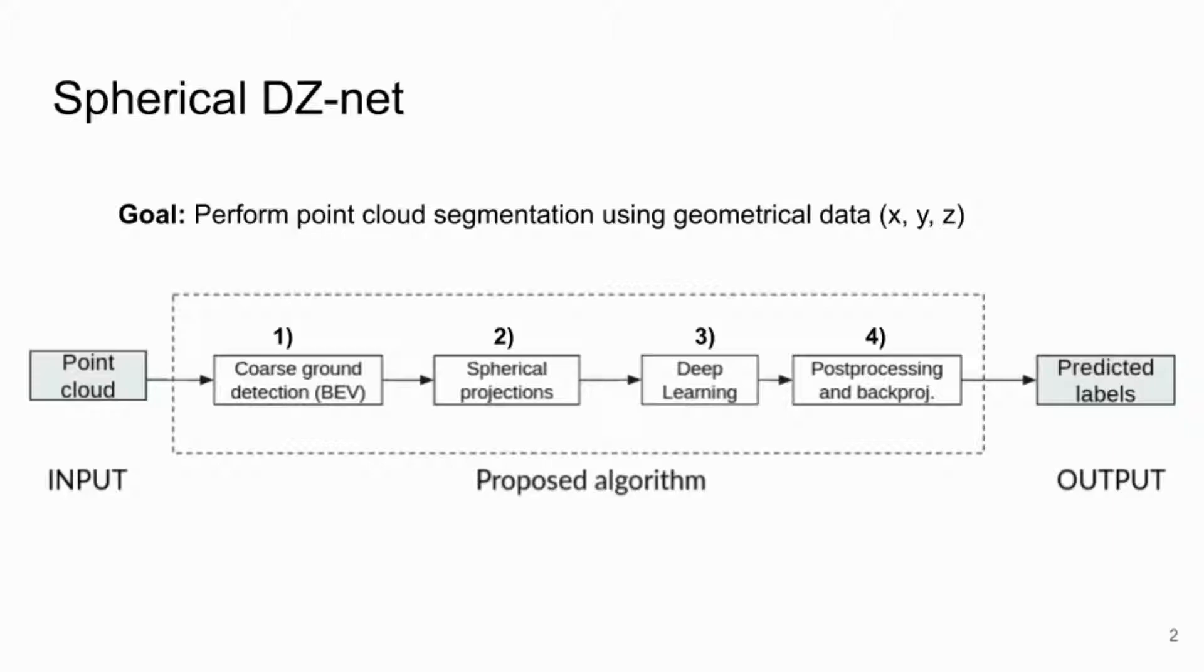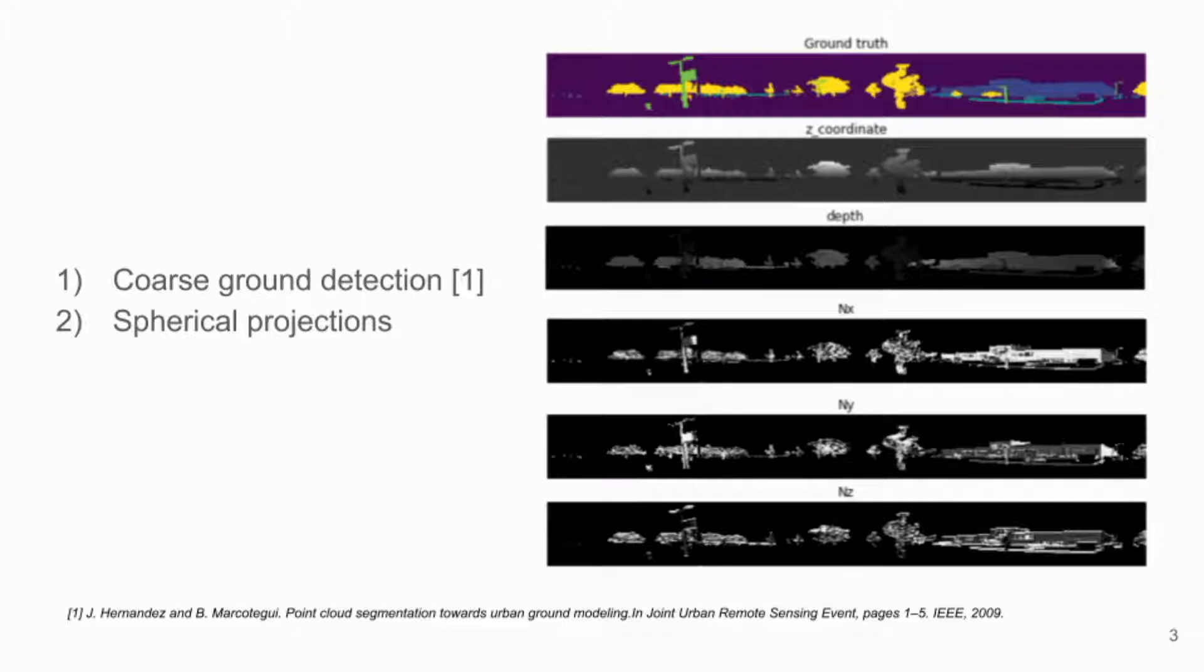First, coarse ground detection from bird's-eye view. Second, spherical projections and feature extraction. Third, train a deep learning model with 2D images. Fourth, post-processing and back-projection. The first stage is performed by means of the quasi-flat-zones algorithm proposed by Hernandez and Marcotegui in 2009. It allows us to reduce the typical class imbalance in urban point clouds.